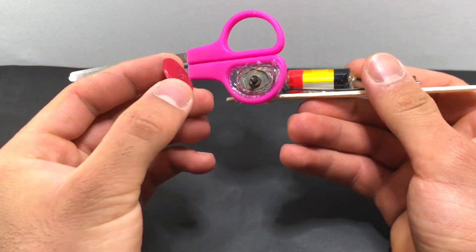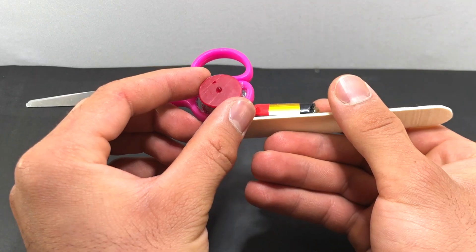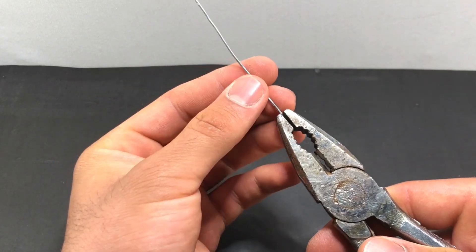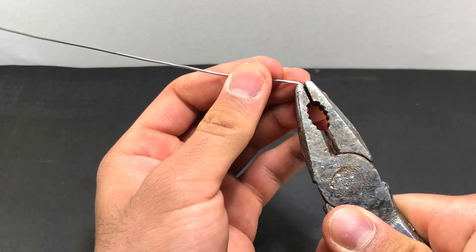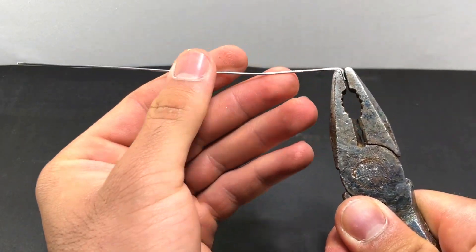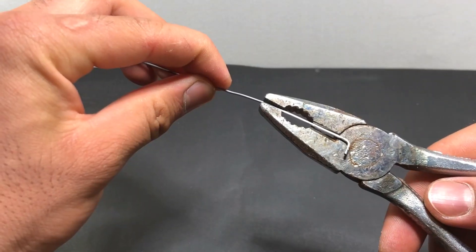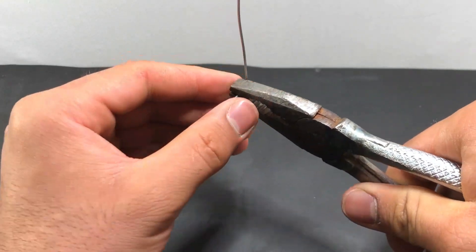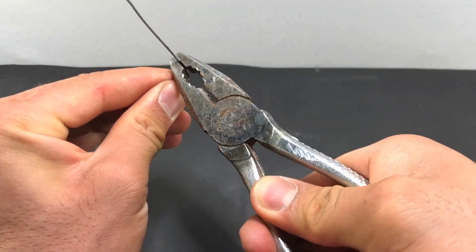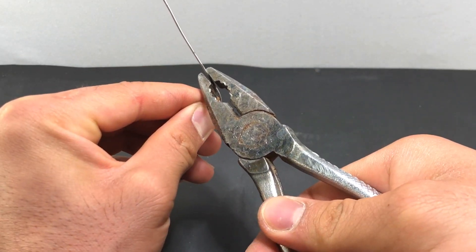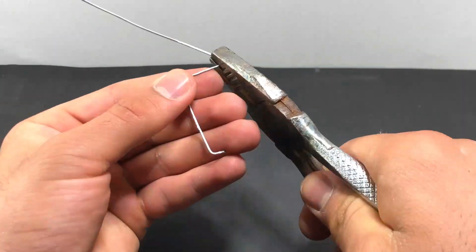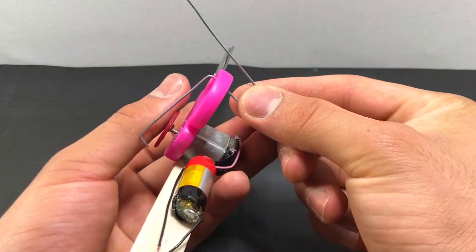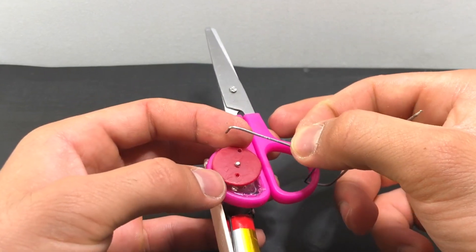In this part we use the cam that I made in the previous videos. In this part we shape a wire that acts as the axis of power transmission from the cam to the scissor. In this step we connect the wire to the scissors and the cam.